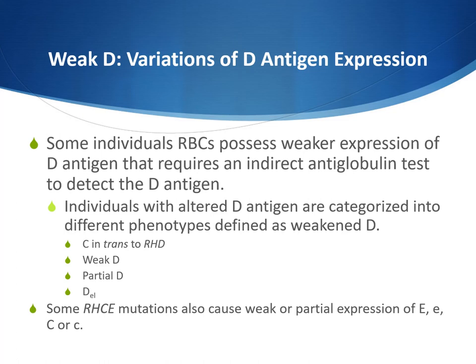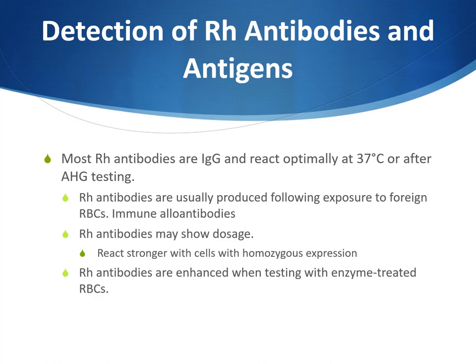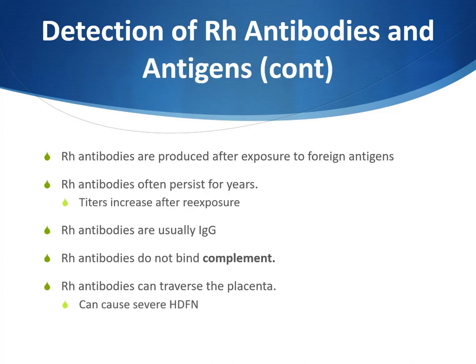Most Rh antibodies are IgG and react optimally at 37°C or after AHG testing. Rh antibodies are immune alloantibodies, usually produced following exposure to foreign red blood cells. They may show dosage — reacting stronger with cells showing homozygous expression of the antigens. Rh antibodies are enhanced when testing with enzyme-treated red blood cells. They often persist for years, and titers increase after re-exposure. Rh antibodies do not bind complement. Rh antibodies can transfer across the placenta and cause severe hemolytic disease of the fetus and newborn.